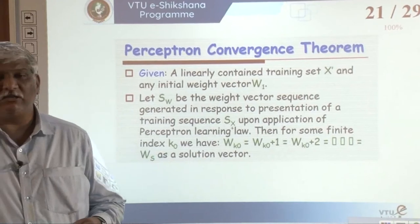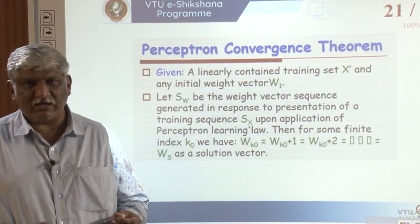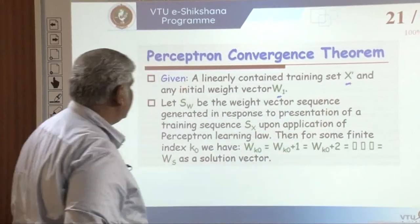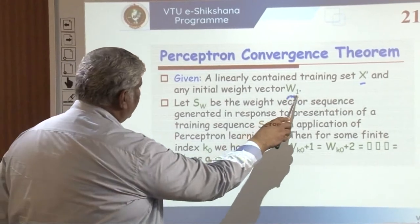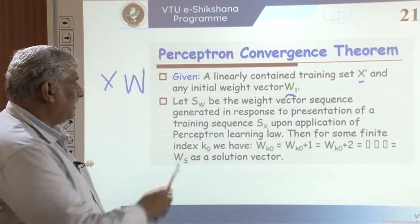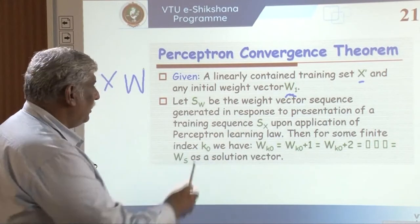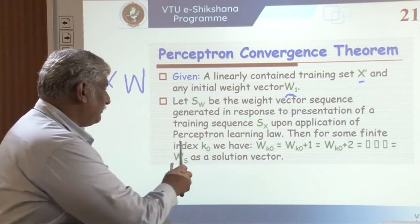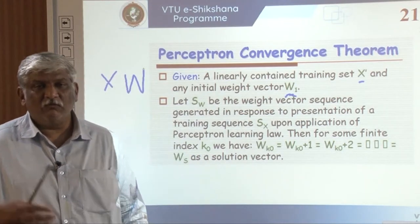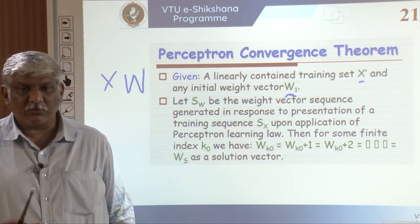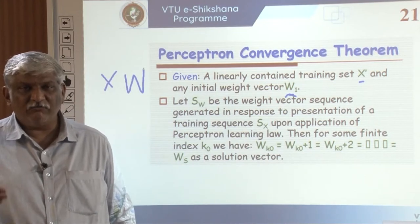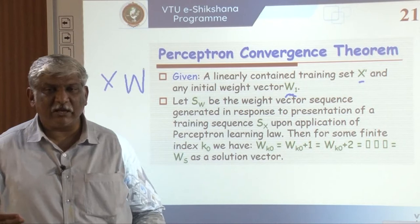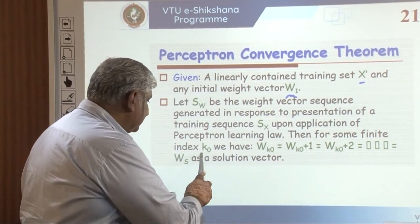The Perceptron Convergence Theorem simply states: given a linearly separable training set x and an initial weight vector w1, let sw be the weight vector sequence generated in response to the presentation of a training sequence Sx upon application of the Perceptron training learning law. Our intention is to make the Perceptron learn by adjusting the weights so that the error between the actual result and the desired result is minimized. Then for some finite index k0, that is actually convergence.